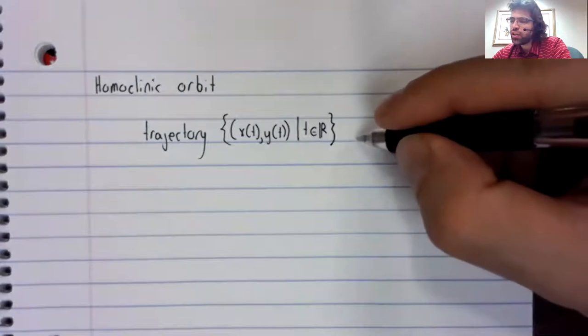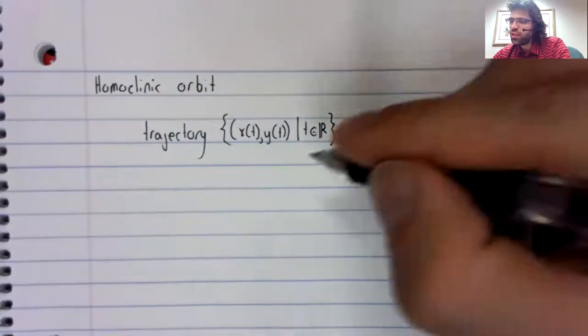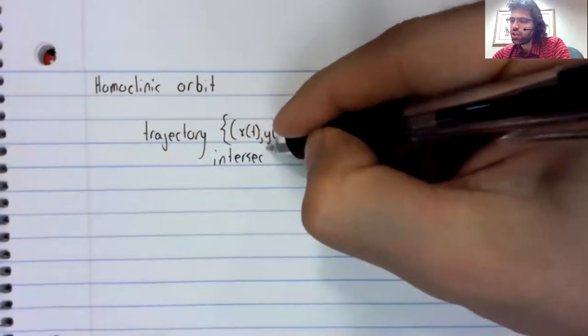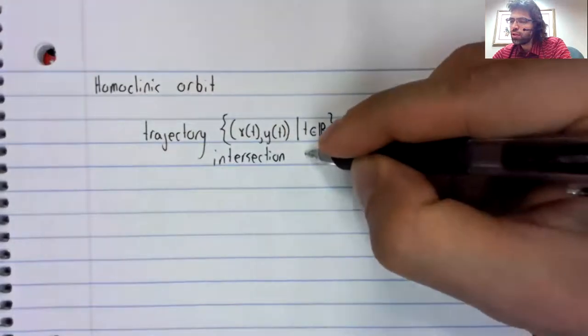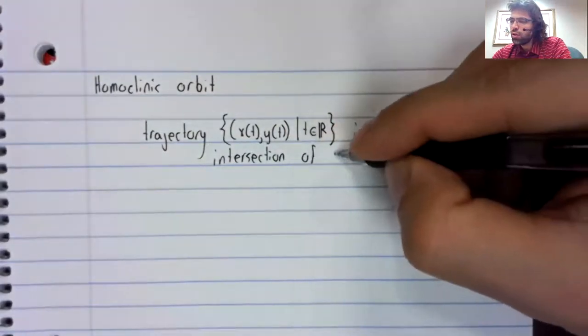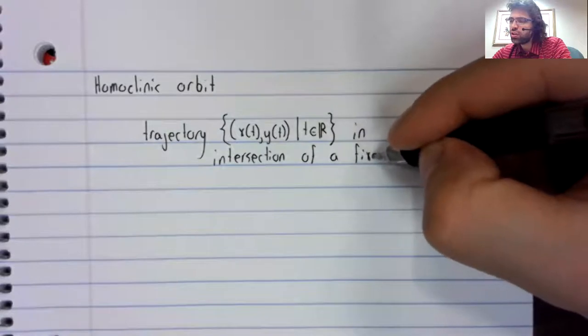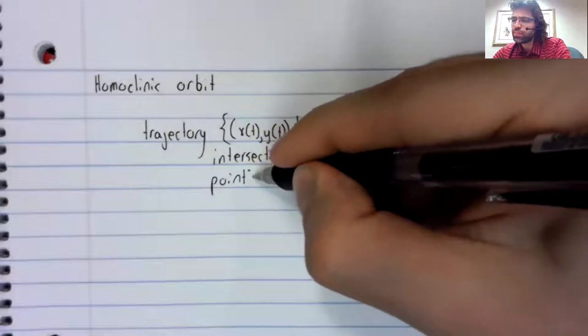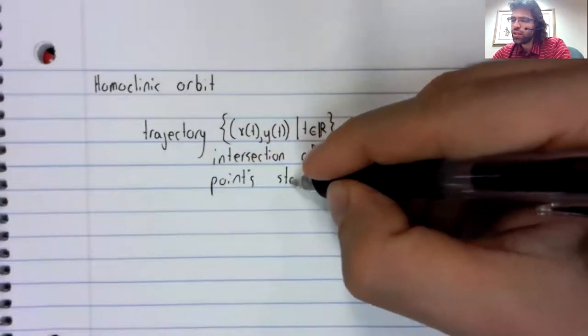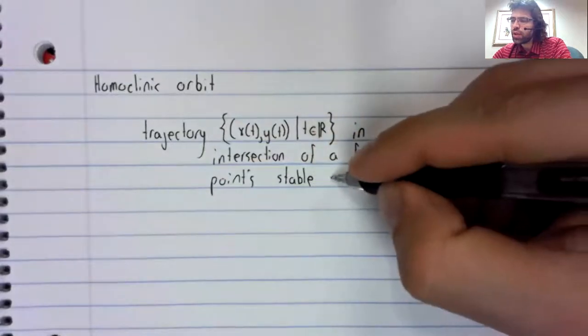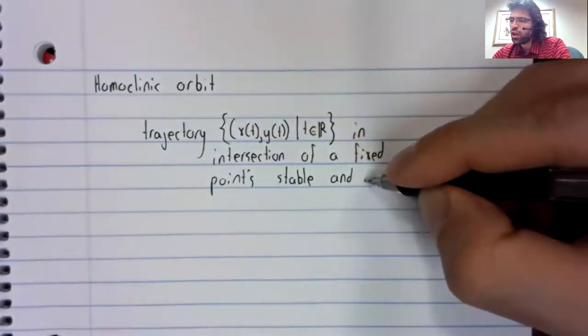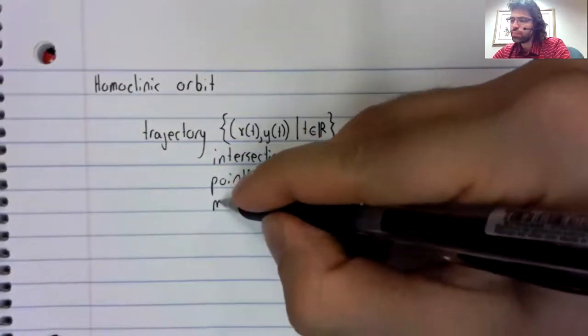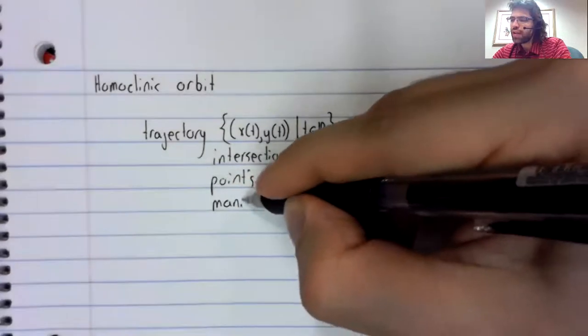It's a trajectory that's in the intersection of a fixed point's stable and unstable manifolds.